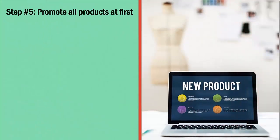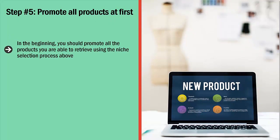Step 5: Promote all products at first. In the beginning, you should promote all the products you retrieved using the niche selection process above. Your strategy is straightforward at this point: promote all the products at your site first and pick the top three winners — the products that convert the most. Focus on conversions, not traffic. Traffic is worthless unless it converts. Always remember that. Pick the top three winners in terms of conversions and stick to those.